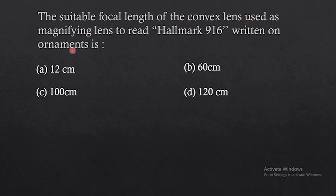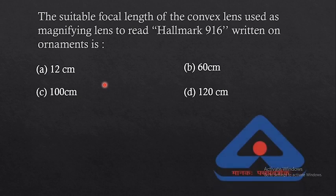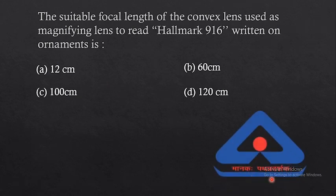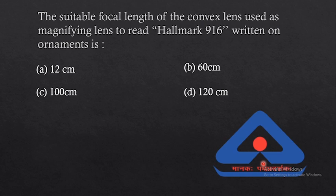The next question: what is the suitable focal length of the convex lens used as a magnifying lens to read the hallmark 916 written on ornaments? The hallmark 916 symbol is usually found on gold ornaments to indicate purity. This symbol is very small in size, and we need a magnifying lens to read it. We know that a convex lens is used as a magnifying lens.